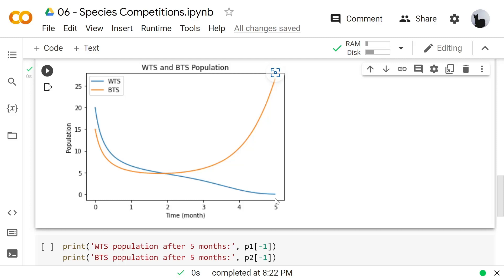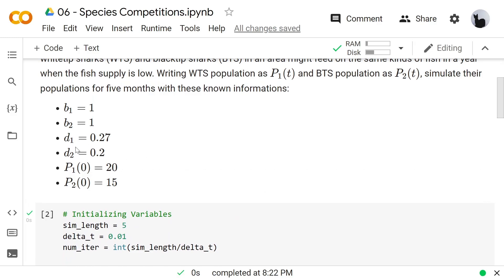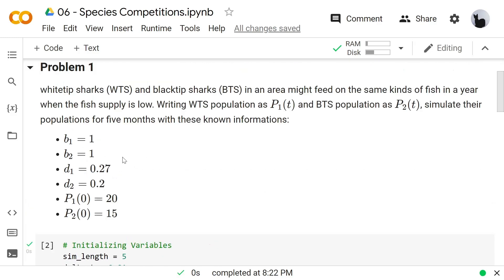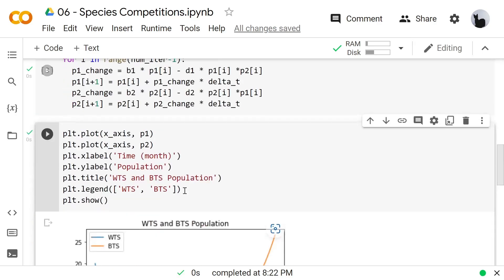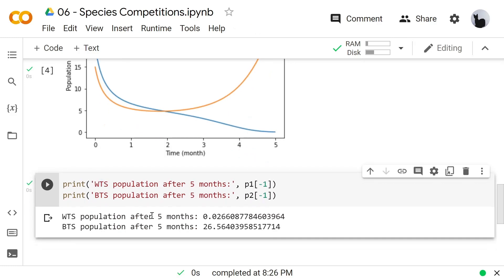And let's take a look at the death rate of each species. Notice that d1 is higher than d2 and that means the white-tip sharks is more likely to die in each iteration than the black-tip sharks.